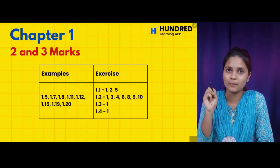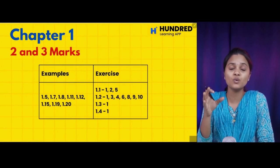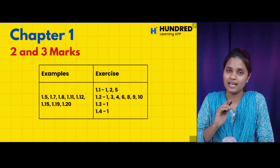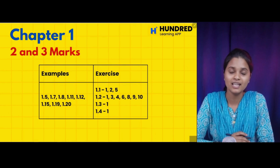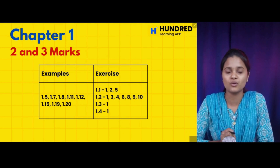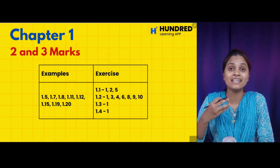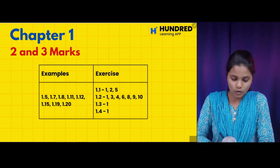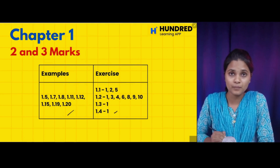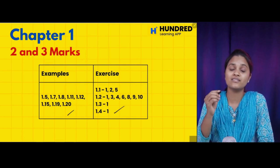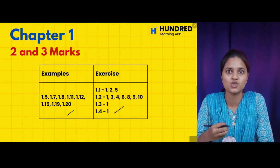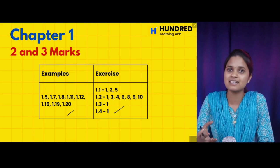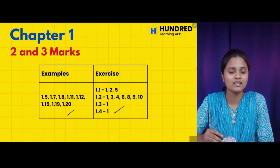So in chapter 1, there are 2-mark and 3-mark questions. Examples and exercises — there are all questions. Now, do a screenshot. If you are reading these questions, do not skip these questions. You will complete the next question — just click on the next question. In this chapter, you will complete the checklist.